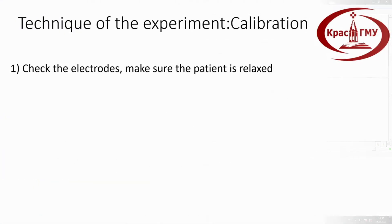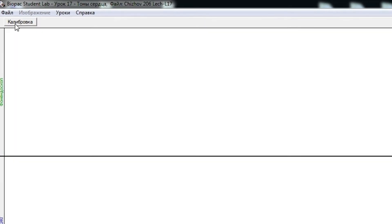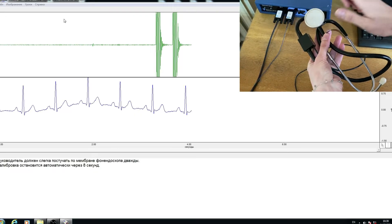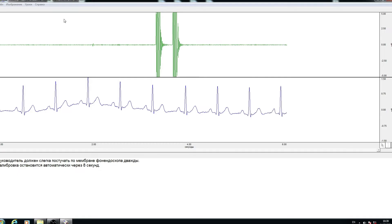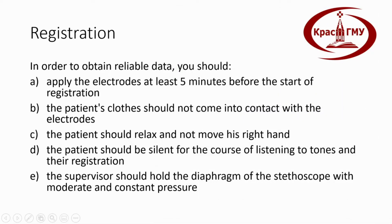Technique of the experiment — calibration: Check the electrodes and make sure the patient is relaxed. Click on the calibrate icon located in the upper left corner of the setup window to start the calibration. The supervisor should lightly tap twice on the diaphragm of the stethoscope. The calibration procedure will stop automatically after eight seconds.